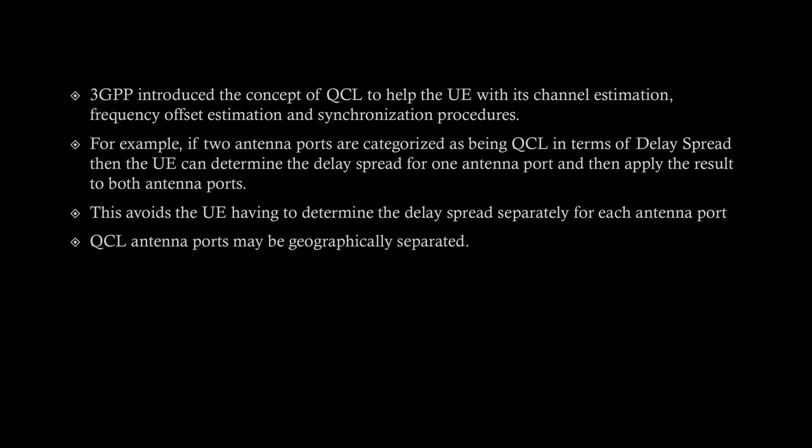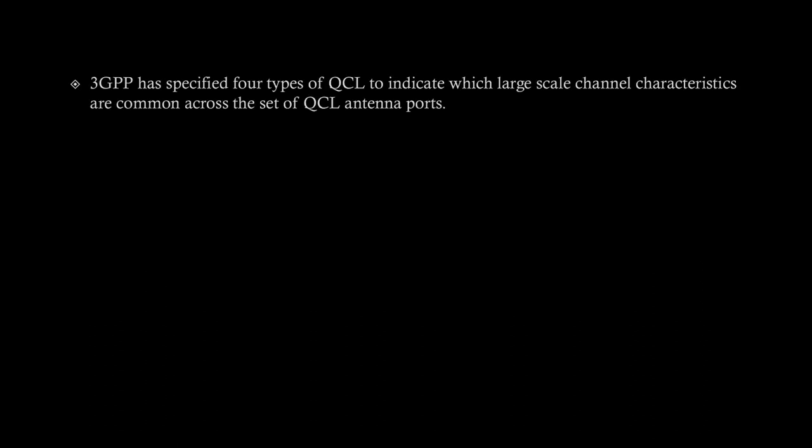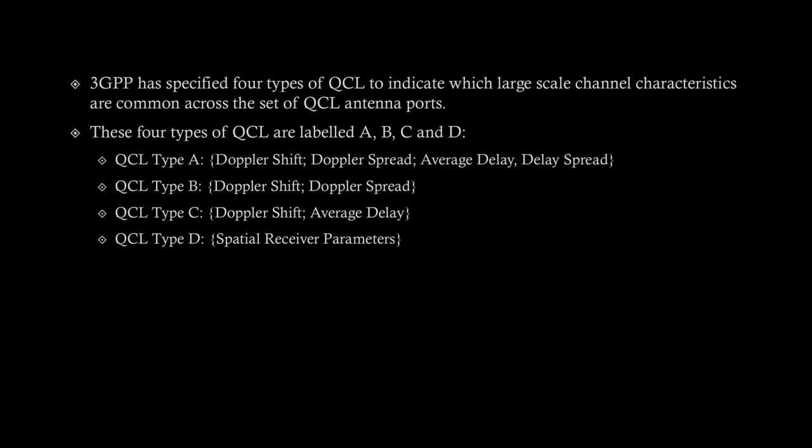Quasi co-located antenna ports may also be geographically separated. 3GPP has specified four types of quasi co-location to indicate which large-scale channel characteristics are common across a set of QCL antenna ports, labeled A, B, C, and D. Type A has Doppler shift, Doppler spread, average delay, and delay spread as common characteristics. Type B has Doppler shift and Doppler spread. Type C has Doppler shift and average delay. Type D has spatial receiver parameters.